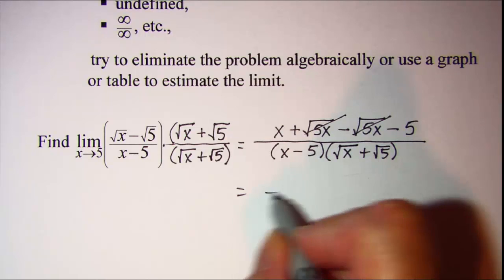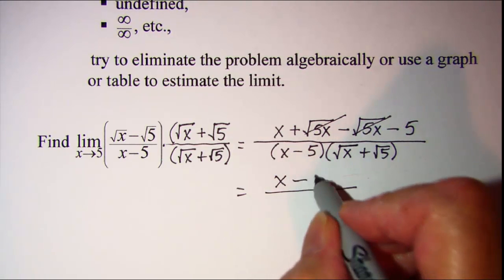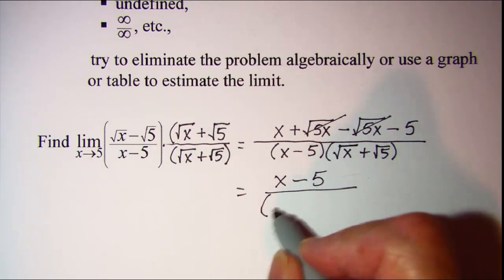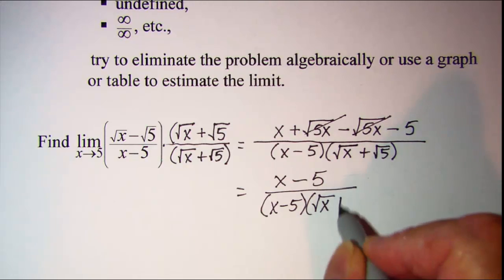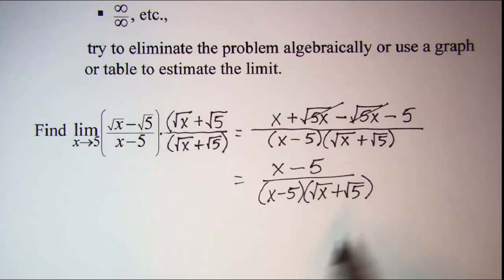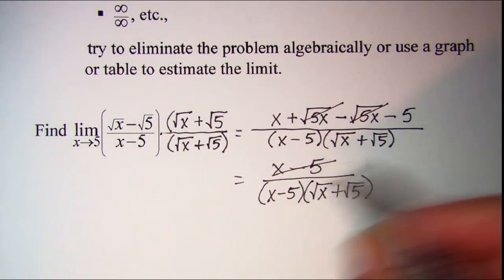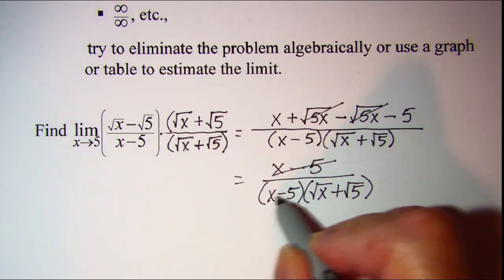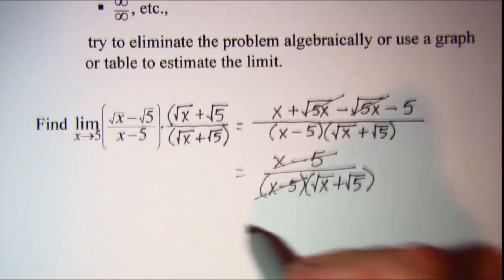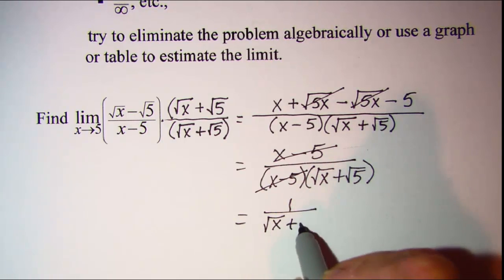And I have x minus 5 over x minus 5 times root x plus root 5. Now our x minus 5 in the numerator will cancel with our x minus 5 factor in the denominator, and we'll have 1 over root x plus root 5.